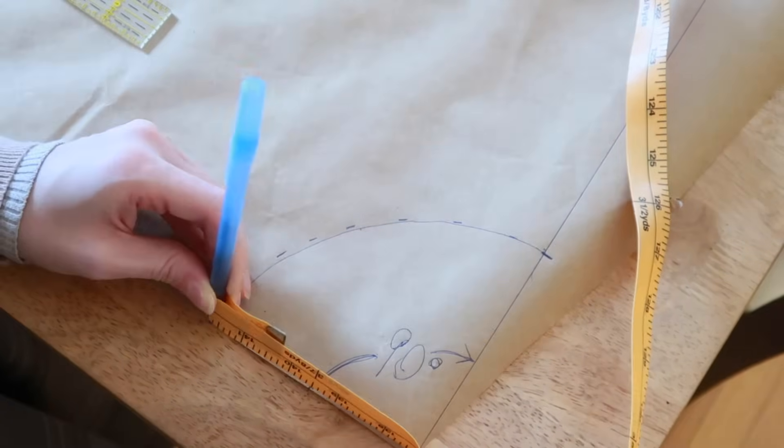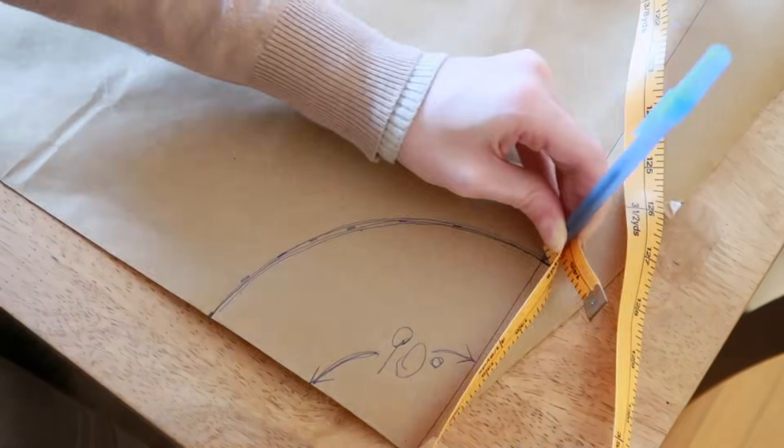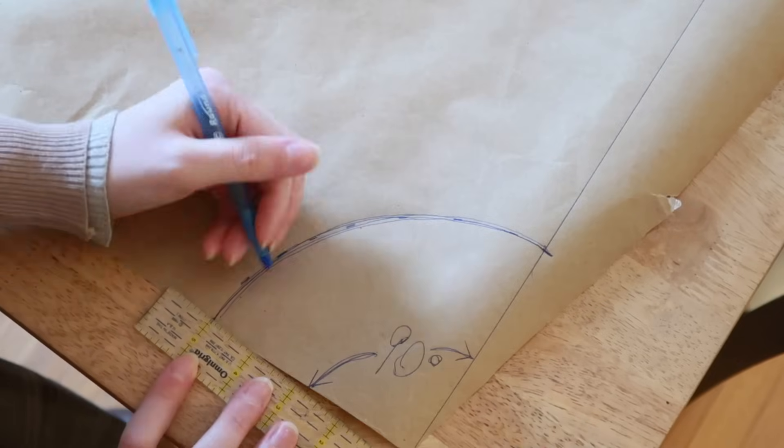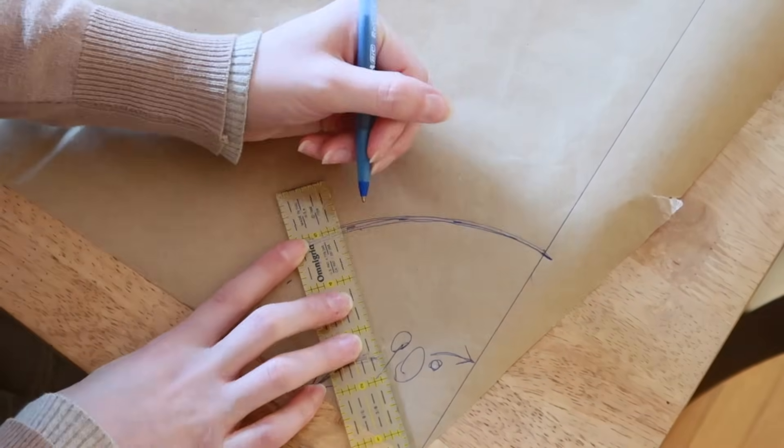Or, if you have steady hands, you can use a string and swing out a nice curve. Then, before I forget, I'm going to draw a second line a half inch closer to the angle.